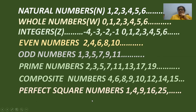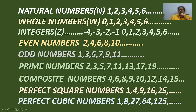Perfect square numbers are numbers which you can write in square form: 1 squared is 1, 2 squared is 4, 3 squared is 9, 4 squared is 16, 5 squared is 25, and so on. Perfect cubic numbers are numbers we can represent in cubical form: 1 cubed is 1, 2 cubed is 2×2×2 which equals 8, 3 cubed is 3×3×3 which equals 27, and so on.